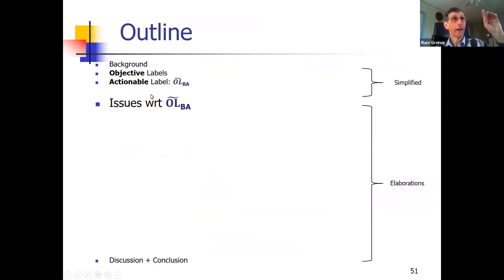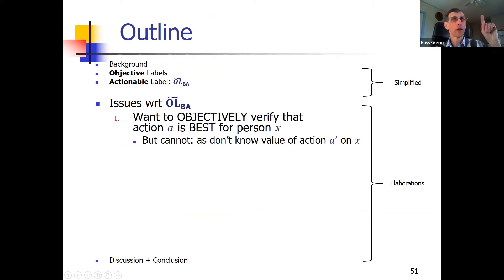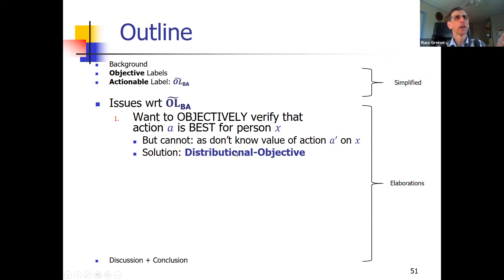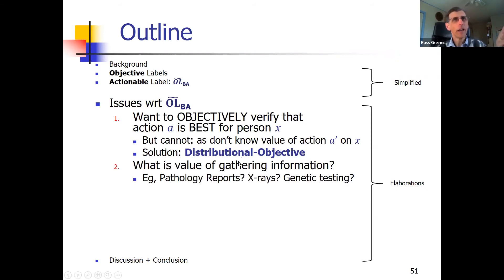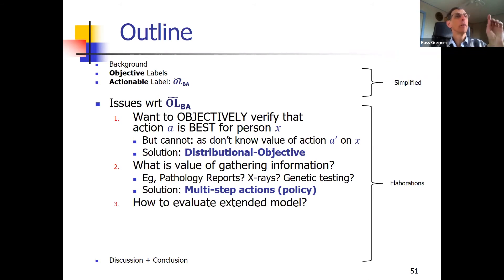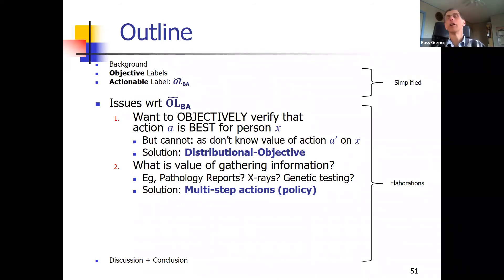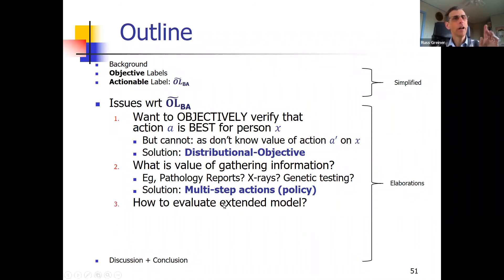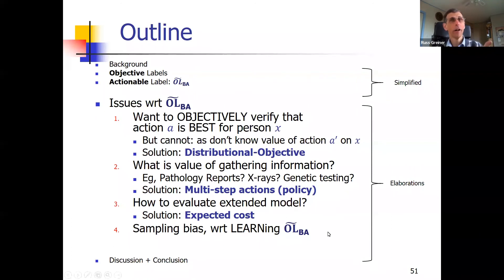That was an overview. There are issues I want to cover now. First: we can't objectively verify the best action, because we don't know other actions. But there's a solution using distributionally objective approaches. Second: colleagues noted that a GP makes decisions, but what about a pathologist giving a pathology report — what's actionable about that? We'll talk about multi-step actions as part of overall most effective action policies. Third: how do you evaluate an extended model with multiple steps? I'll talk about expected costs. Finally, if I have time, I'll discuss sampling bias and why RCTs address that.